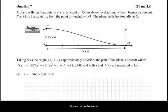Taking O as the origin, f(x) approximately describes the path of the plane's descent where f(x) equals a cubic function where we're given c and d, we don't know what c and d are, and it's described as x goes from minus 5 to 0. So if we look at the graph, that's minus 5, minus 4, minus 3, minus 2, minus 1 and 0. Show that d equals 0.